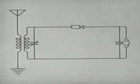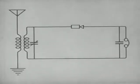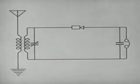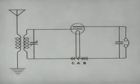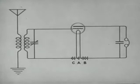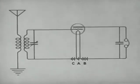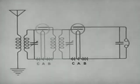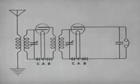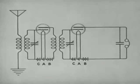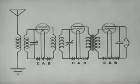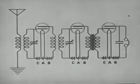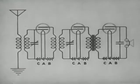Here is a diagram of a simple receiving set which uses a crystal as a detector. The vacuum tube is more efficient than a crystal because it also acts as an amplifier. If we wish a louder signal, we may add a radio frequency amplifier ahead of the detector. A still louder signal may be obtained by adding an audio amplifier after the detector. We can now use a loudspeaker instead of headphones.